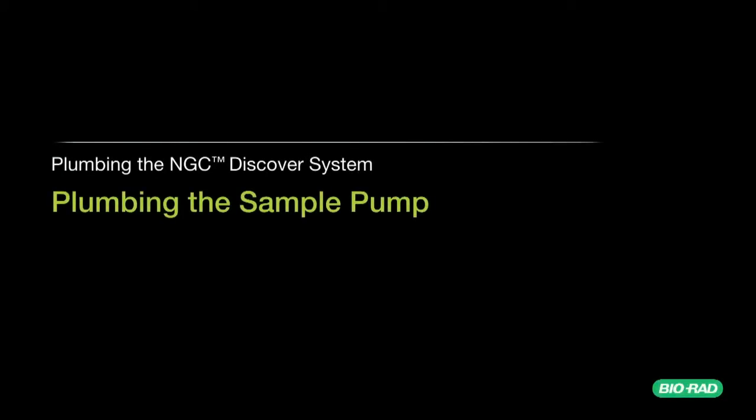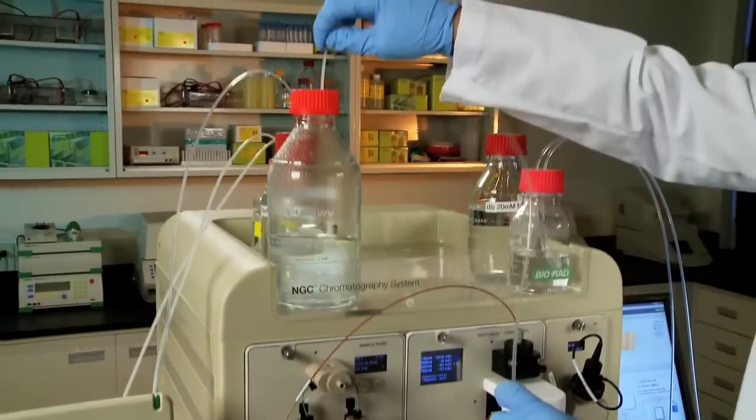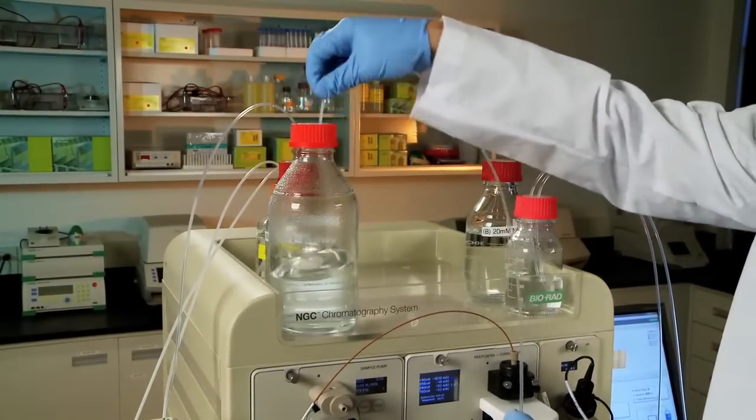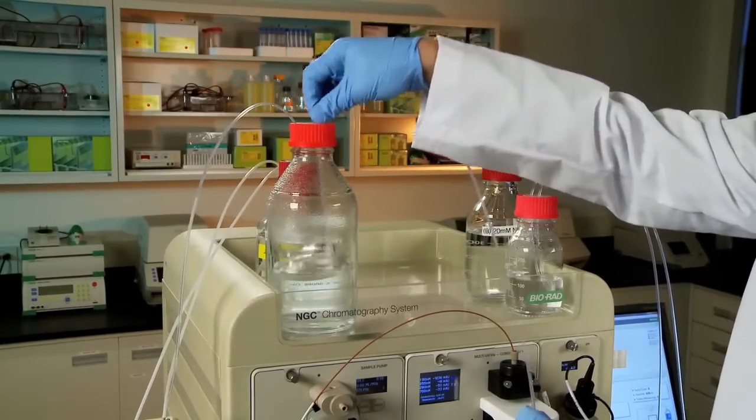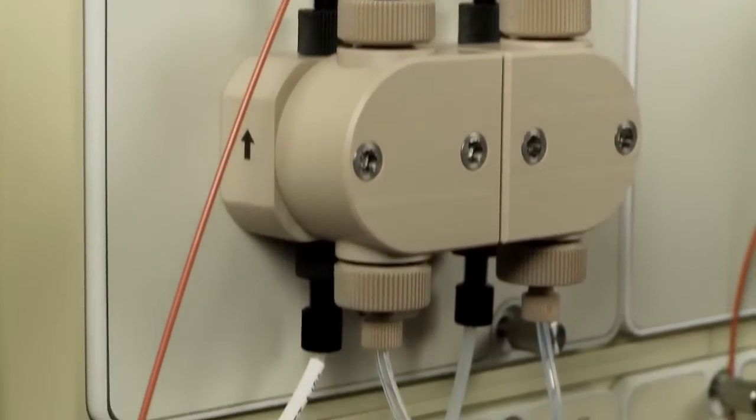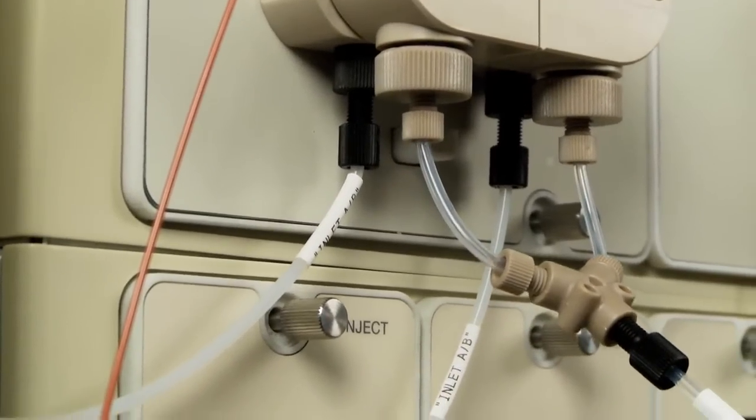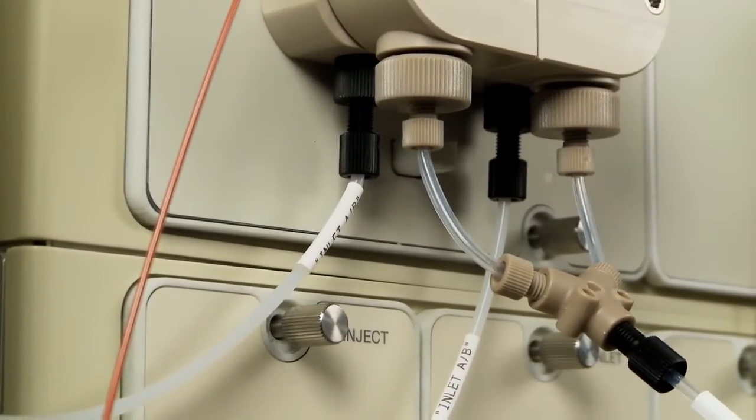Plumbing the sample pump. Connect inlet tubing to the sample pump inlet manifold and immerse the open end of the tubing into the intended buffer bottle. Inlet solvent filters may be used. The sample pump has an automatic piston washing system that requires plumbing to 20% isopropyl alcohol, similar to the system pump head washing system previously covered.